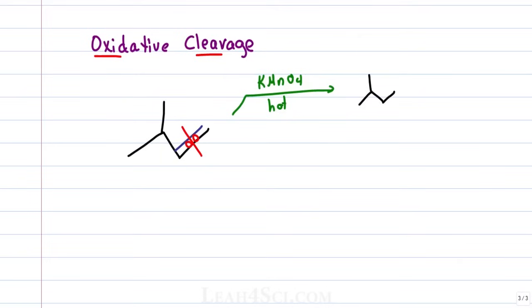Redraw the molecule exactly as you see it and then turn the terminal carbon into a carboxylic acid. If it's secondary, it'll be a ketone and if it's a single carbon, you get CO2, carbon dioxide.